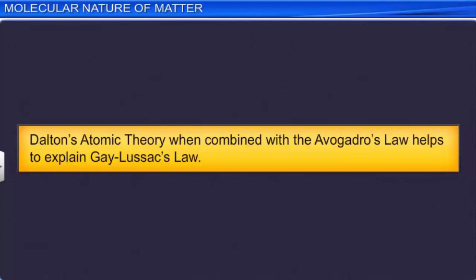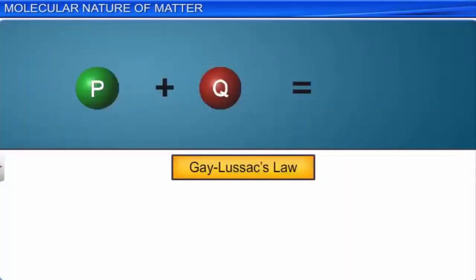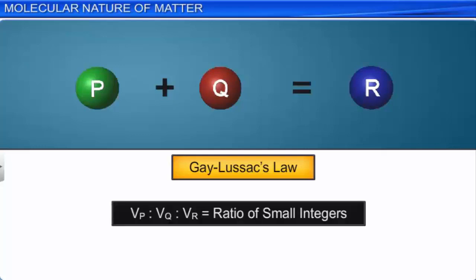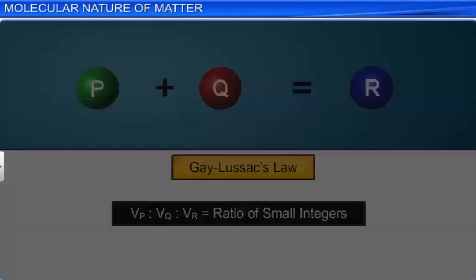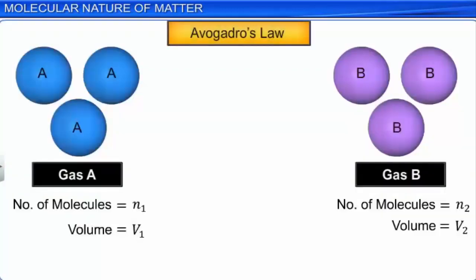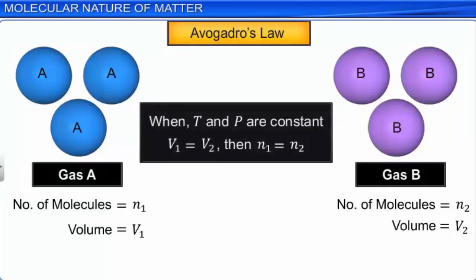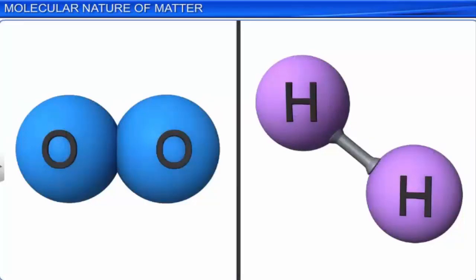Dalton's atomic theory when combined with Avogadro's law helps explain Gay-Lussac's law. Gay-Lussac's law states that when two or more gases combine chemically to form another gas, the ratio of volumes of the gases are in the ratio of small integers. Avogadro's law states that at constant temperature and pressure, equal volumes of all gases contain the same number of molecules. Dalton's atomic theory is also known as the molecular theory of matter, as the elements are often found in the form of molecules.